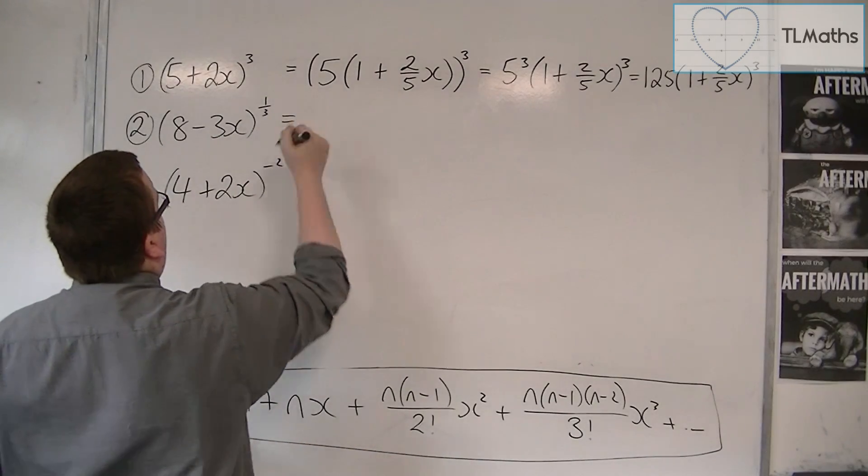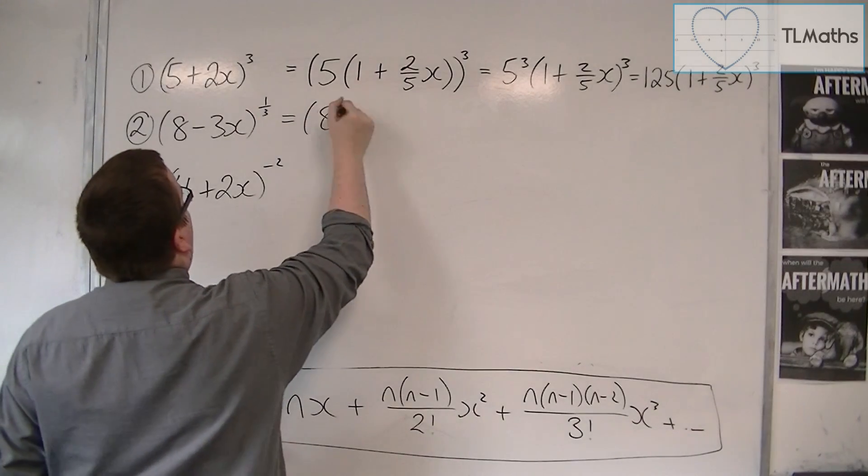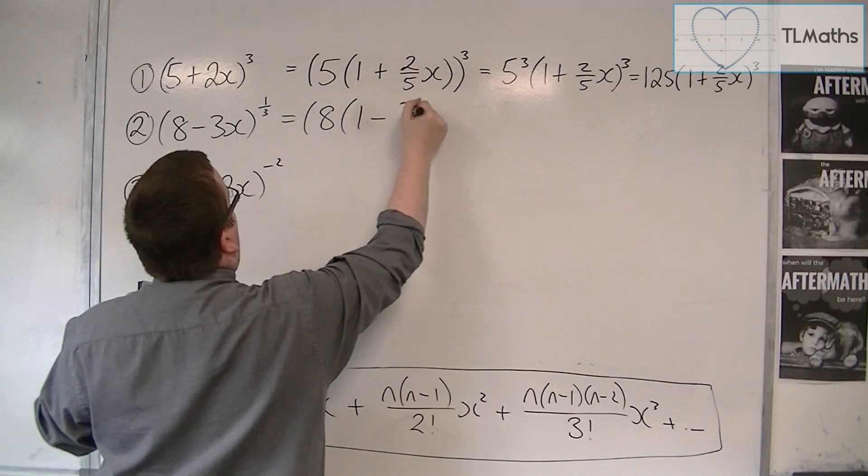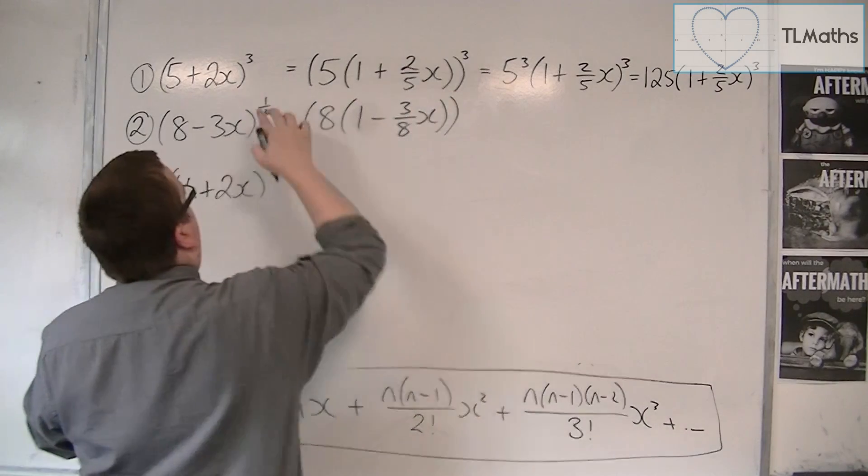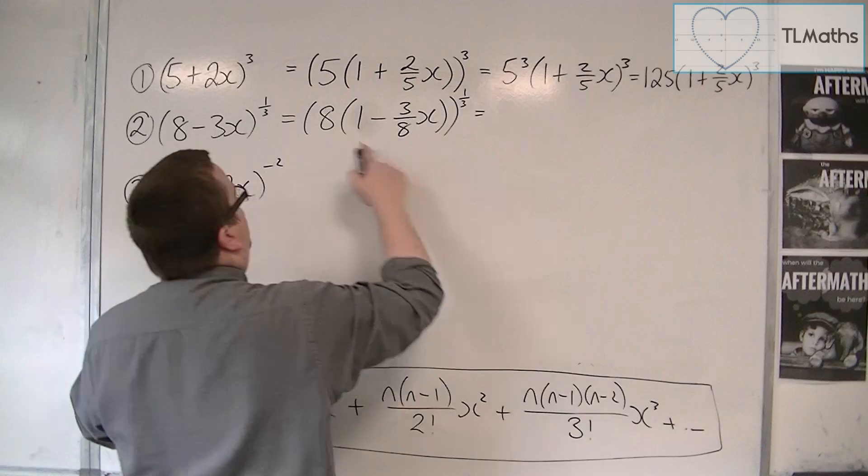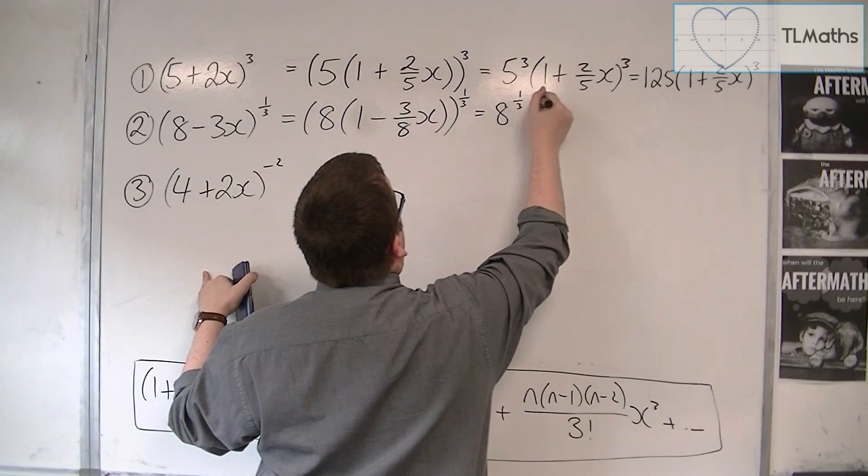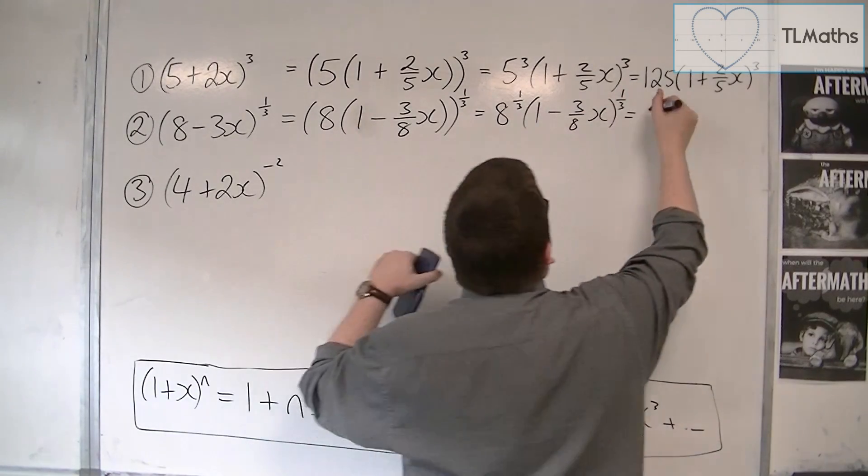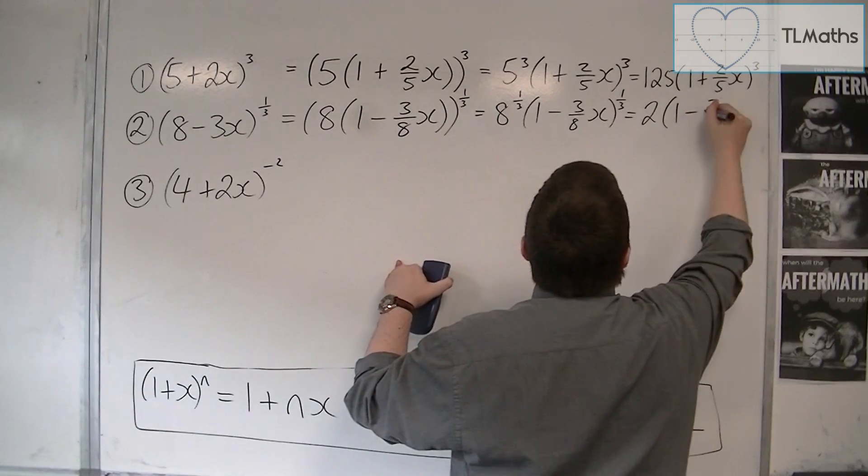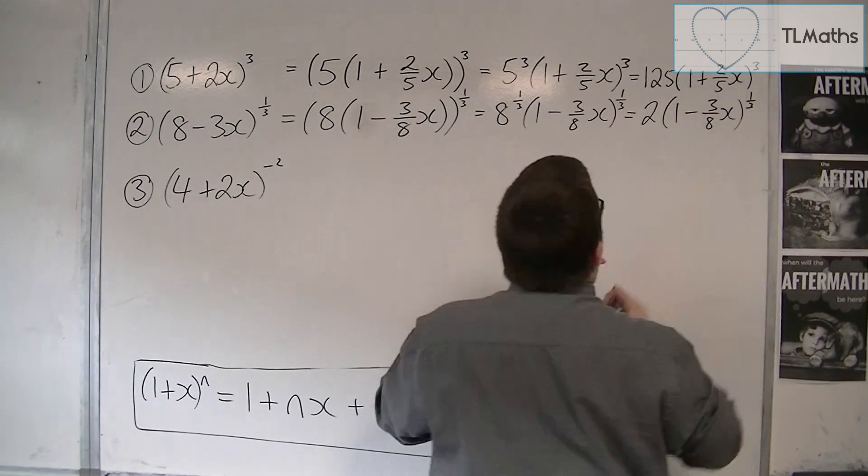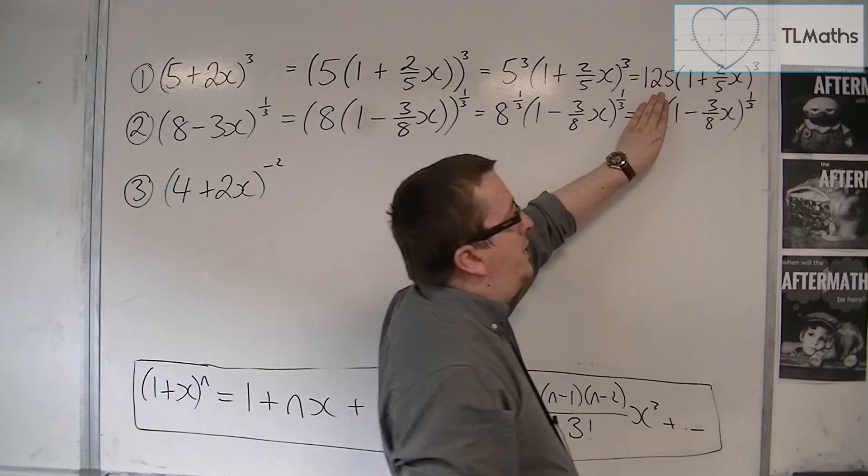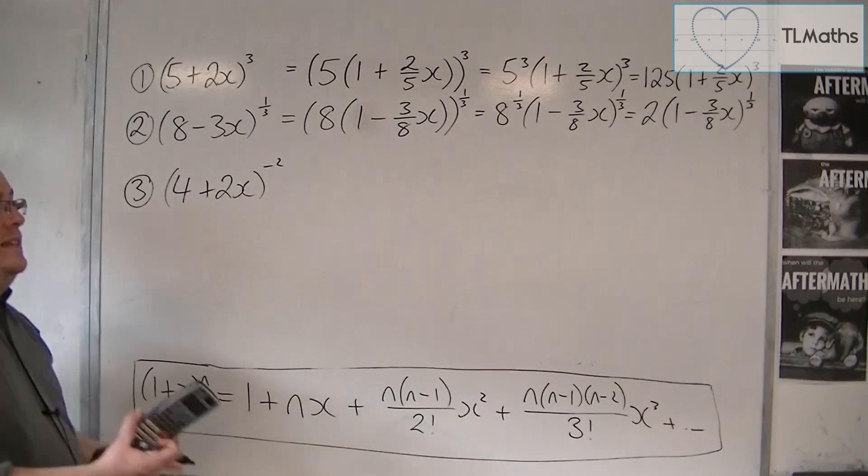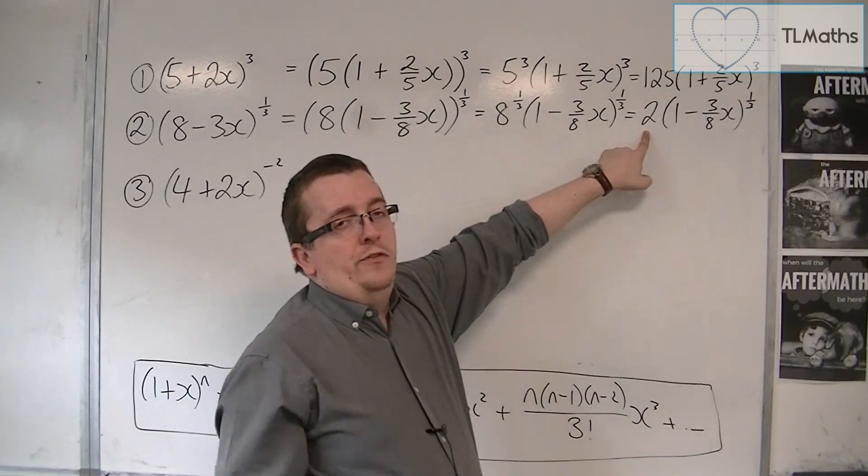If we look at this second one, we're going to do exactly the same process. This time, we'll pull 8 outside. We'll have 1 minus 3 eighths x and it will be to the power of a third. So, you've got 8 to the third times 1 minus 3 eighths x to the third. 8 to the third is 2. So, 1 minus 3 eighths x to the power of a third. And you can now expand 1 minus 3 eighths x to the power of a third using the formula because it's in the format of 1 plus x to the n. And then you would multiply each of your terms by 2.